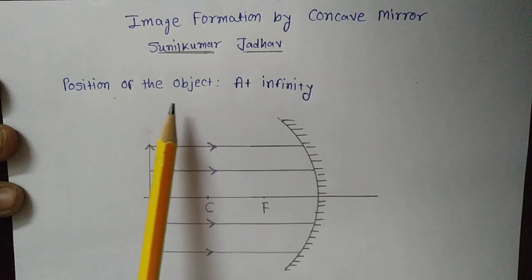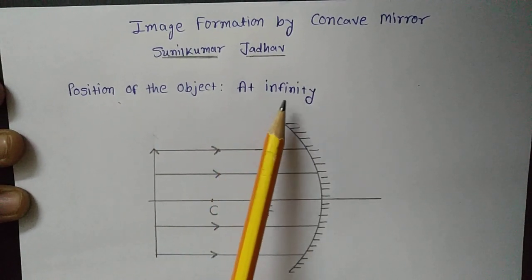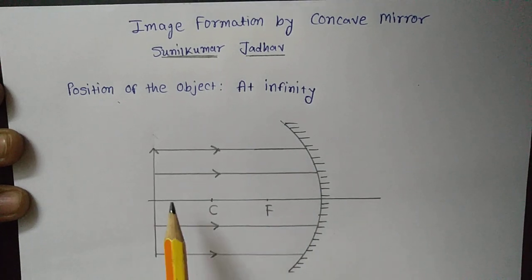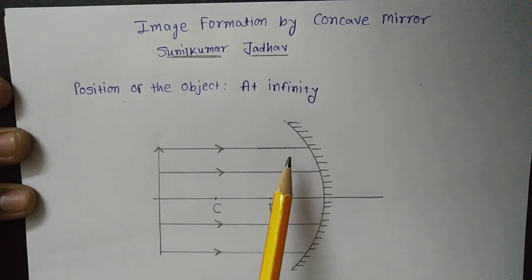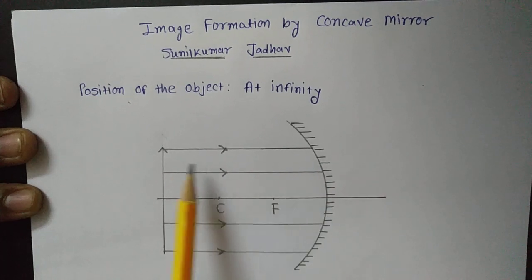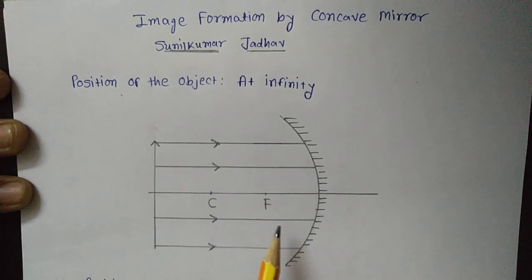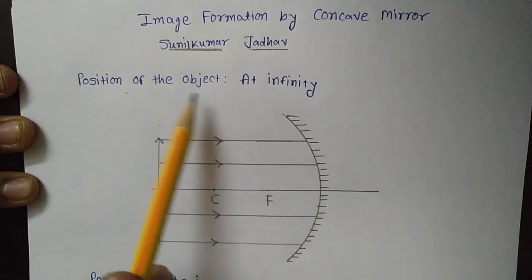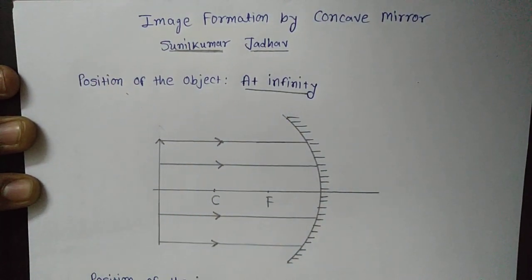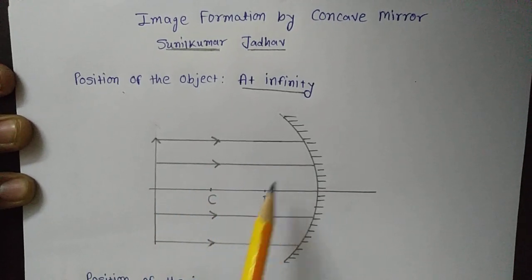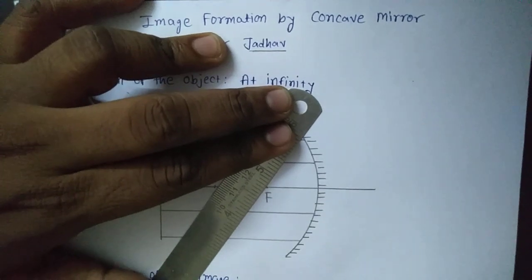First, that is position of the object — if we keep it at infinity. If we keep the object at infinity, we know that all the rays coming from a distant object, that is from infinity, are parallel to the principal axis. So if the object is kept at infinity, all those rays coming parallel to the principal axis, after reflection, will pass through principal focus F.